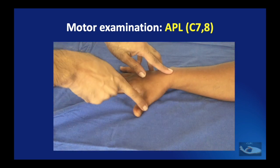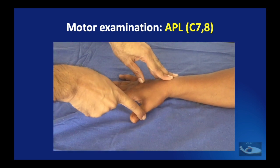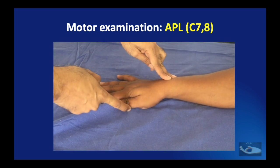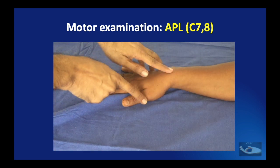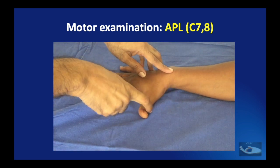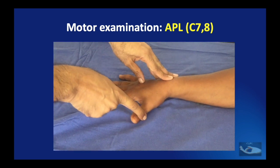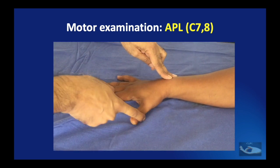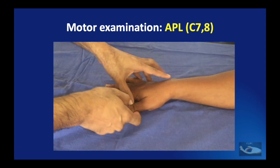When testing the abductor pollicis longus, the patient is asked to keep the hand flat on the table and abduct the thumb at the carpometacarpal joint; resistance can be offered at the level of the metacarpal region to test the power of the muscle. The sensory examination of the radial nerve is done by testing sensation along the posterior cutaneous nerve of the arm territory, the lower lateral cutaneous nerve of the arm, the posterior cutaneous nerve of the forearm, and the superficial branch of the radial nerve as shown in the diagram.